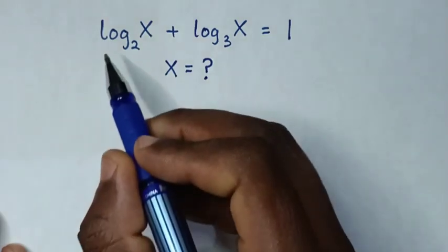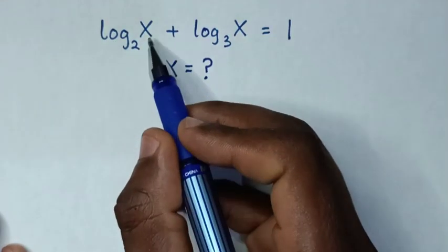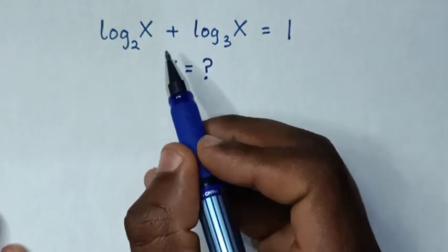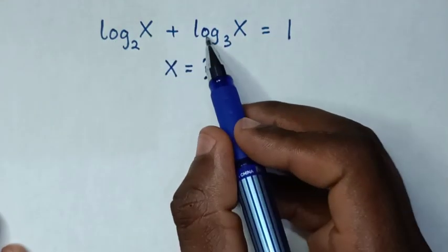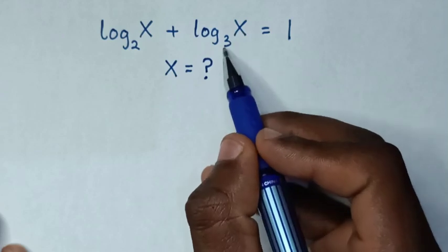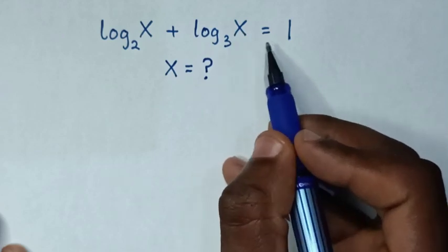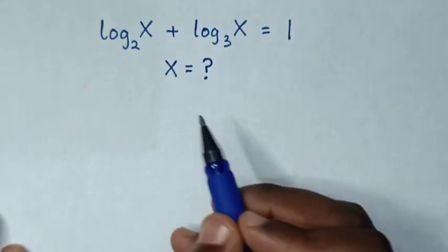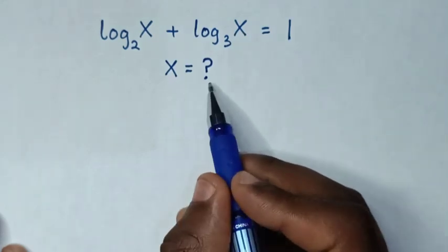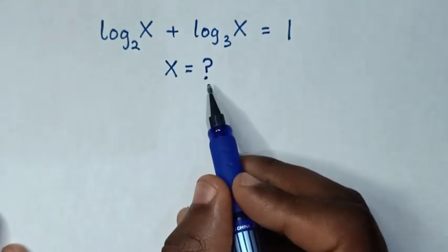Hello! How to solve log of x base 2 plus log of x base 3 is equal to 1 — to find the value of x from this equation.